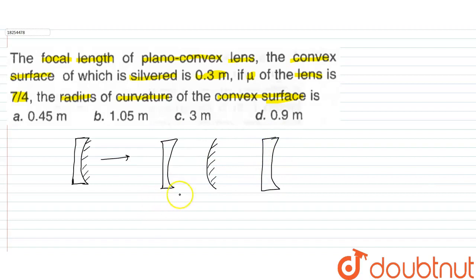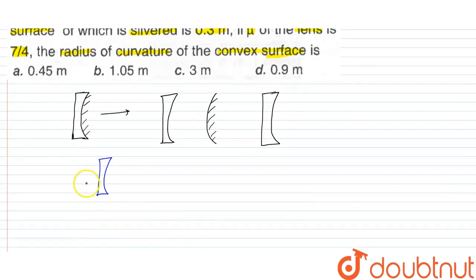Because if we look at it, suppose we have a ray. This is our plano-convex lens with a plane surface. The ray refracts at the lens surface. We have a silvered surface which acts as a mirror. The ray reflects from the mirror and passes through the lens again.